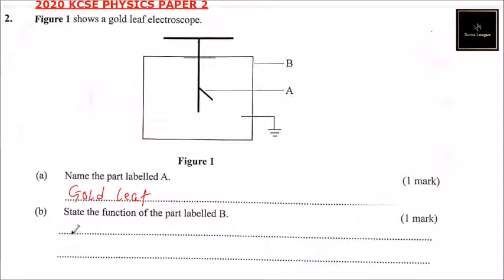Part B: state the function of the part labeled B. So the part labeled B is a container that is holding or covering the gold leaf, and its purpose is to protect the gold leaf from damage, because a gold leaf is just a thin, weak leaf.